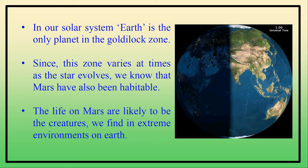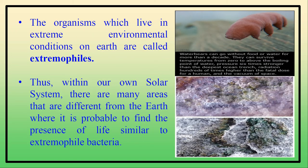This zone varies at times — we know that Mars may also be habitable and that life on Mars is possible. Organisms which live in extreme environmental conditions on Earth are called extremophiles. Organisms that can live in extreme cold, extremely salty water, or extreme heat are called extremophiles. Within our solar system there are many areas different from Earth where similar extremophile bacteria could survive.